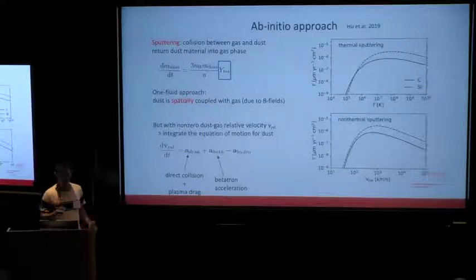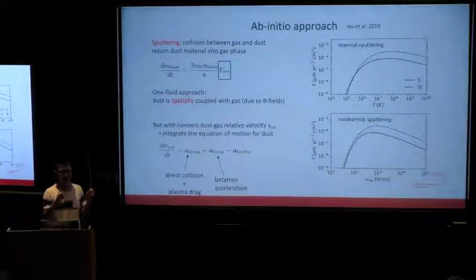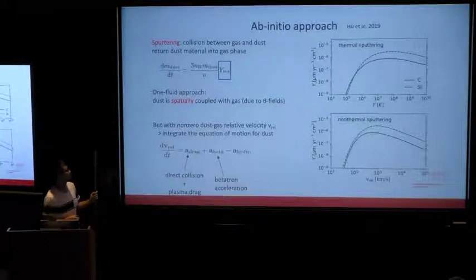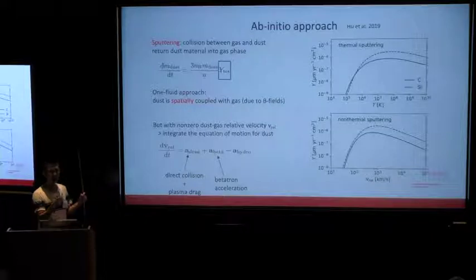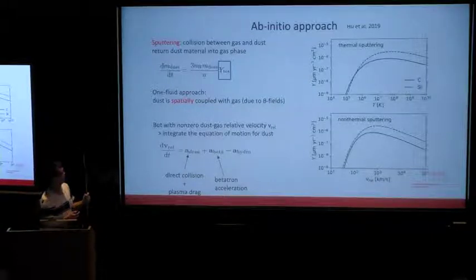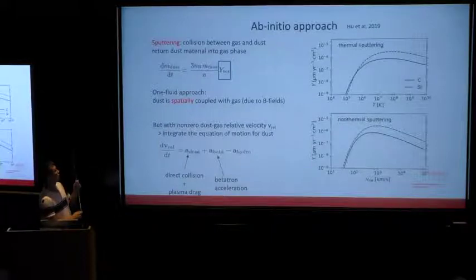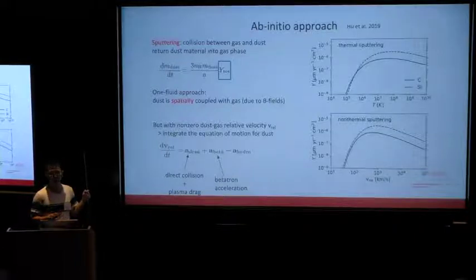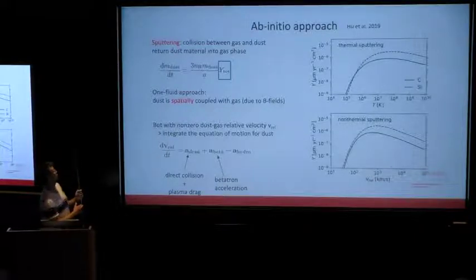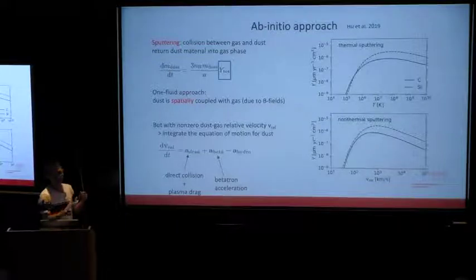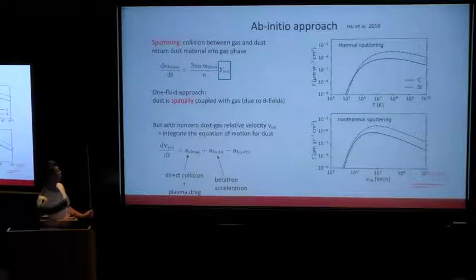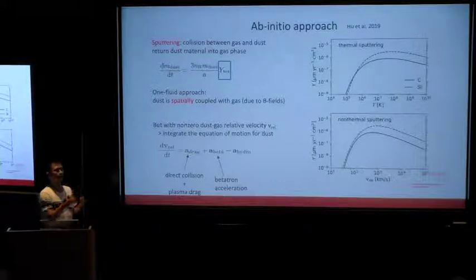What we're trying to do here is run zoom-in simulations that focus on a very small patch of a galaxy, instead of a full cosmological simulation. In this case, we can really resolve the structure of the ISM and follow the physics from first principles. In this particular work, we follow how dust is destroyed in supernova shocks — a physical mechanism called sputtering, just collision between gas and dust — using a one-fluid approach where dust is treated as a passive scalar advected with the gas.